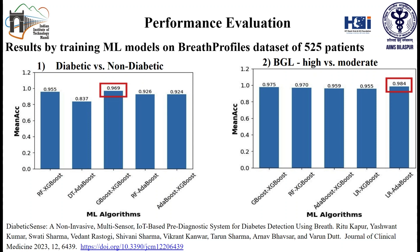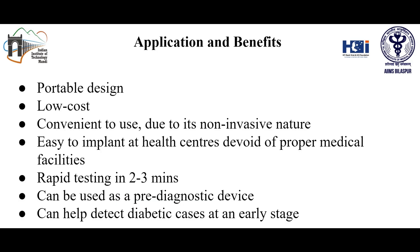Our device has an accuracy of 96.9% for detecting if a person is diabetic versus non-diabetic and predicts if the blood glucose level of a person is high or moderate with an accuracy of 98.4%. The portability, low cost and convenience to use our device makes it an ideal pre-diagnostic tool especially in areas devoid of proper medical facilities.